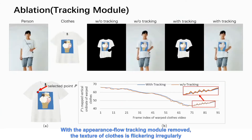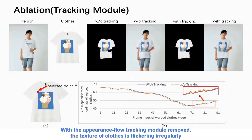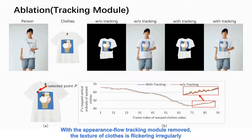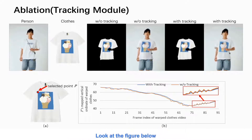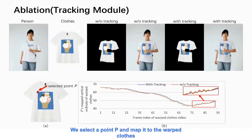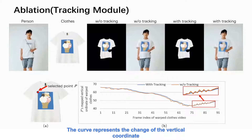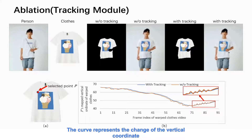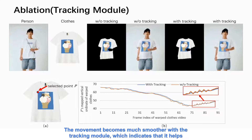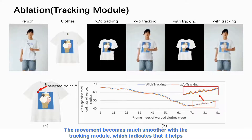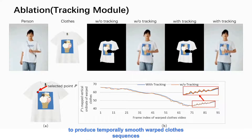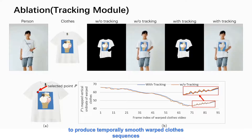With the appearance flow tracking module removed, the texture of clothes is flickering irregularly. Look at the figure below: we select a point P and map it to the warped clothes. The curve represents the change of the vertical coordinate. The movement becomes much smoother with the tracking module, which indicates that it helps to produce temporally smooth warped clothes sequences.